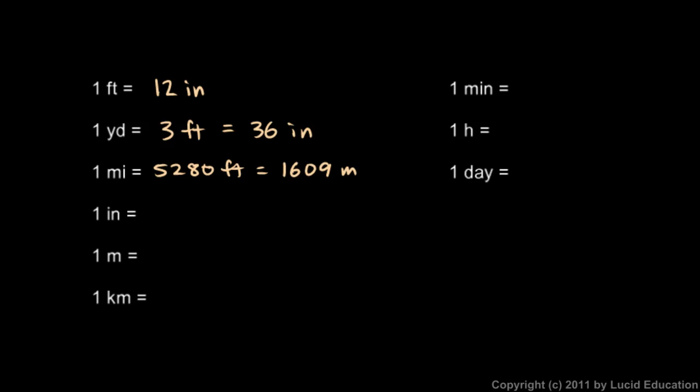So if you run track or something, the 1,600 meter race isn't quite 1 mile. You really need that extra 9 meters to make it a full mile.